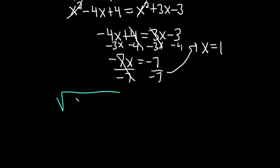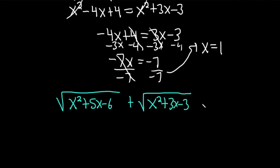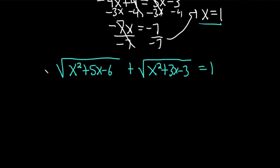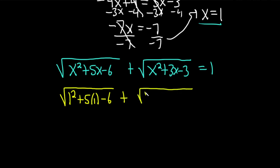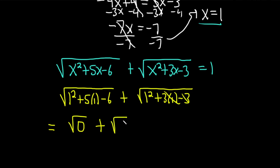The original equation is: the square root of x squared plus 5x minus 6, plus the square root of x squared plus 3x minus 3, equals 1. Plugging in x equals 1: 1 squared plus 5 times 1 minus 6 equals 0, so we get the square root of 0. And 1 squared plus 3 times 1 minus 3 equals 1, so we get the square root of 1. That gives 0 plus 1 equals 1, which checks — the left-hand side equals the right-hand side, so x equals 1 is indeed the answer.